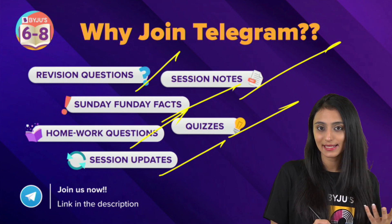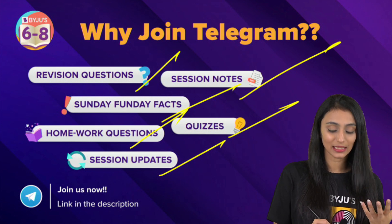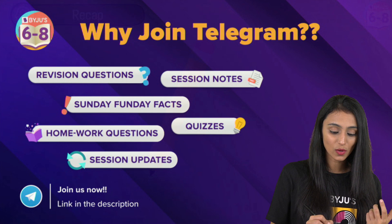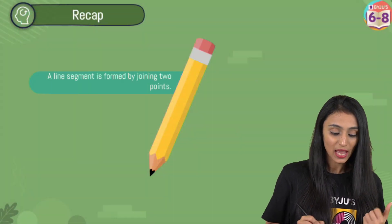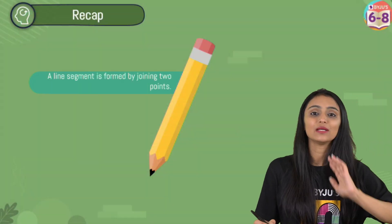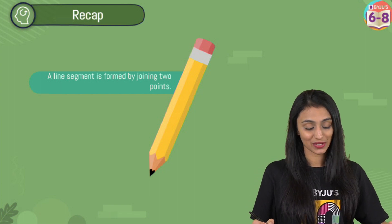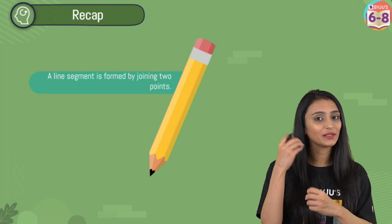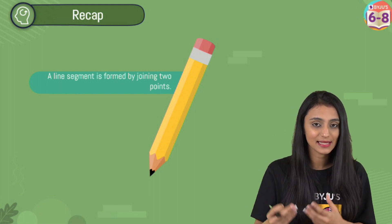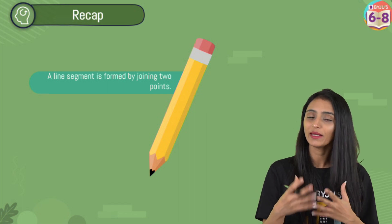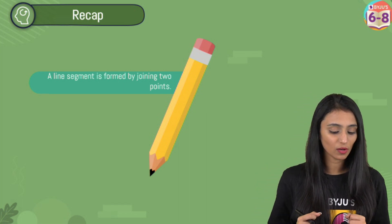Let's get started. Before I properly start the topic, let's do a quick recall on what we learned in the previous session. Previously, we talked about what a line segment is, and the different terms — line segment, line, ray — so many terms we talked about. So let's do a quick recall on them.